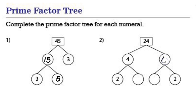Next is 24. 24 can be divided into 6 and 4, since 6 times 4 is 24. Next, 4 is divided into its factors: 2 and 2. Then 6 is divided into its factors: 3 and 2. So the prime factors of 24 are 2 × 2 × 3 × 2.